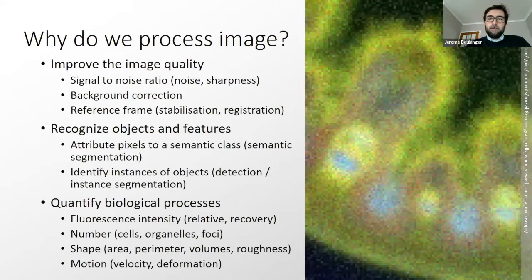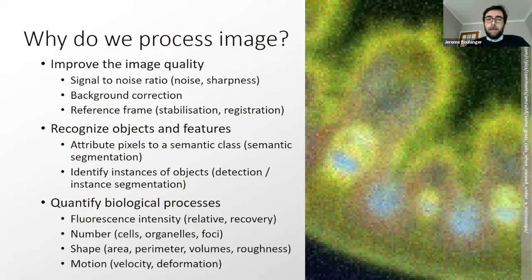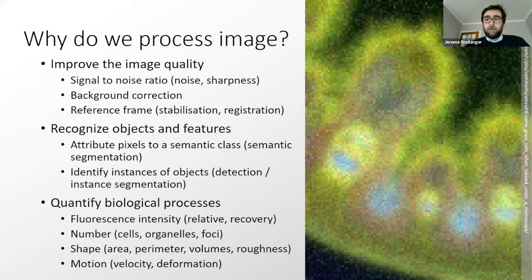We start with why do we process images? We want to improve image quality — for example, improve the signal-to-noise ratio by either reducing the amount of noise or increasing the signal, improving the sharpness of the image. We can also think about background correction to remove fluctuations not related to what we want to measure, and stabilize the image to a reference frame, or register the image between channels or across different samples to do some sort of averaging.